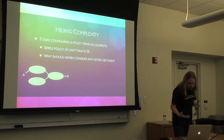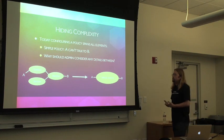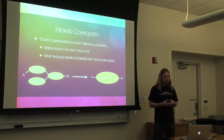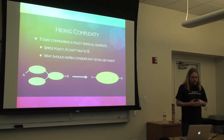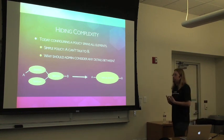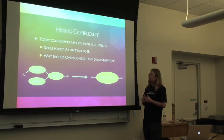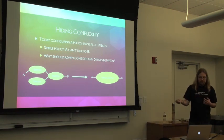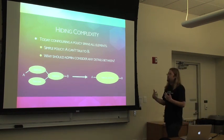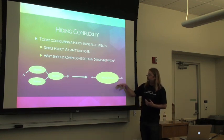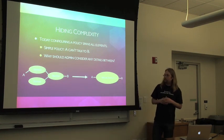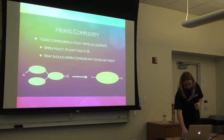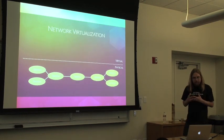Wouldn't it be much simpler if they were provided with a sort of virtual switch, and they would just operate with that, declaring the policies — A can talk with B — and then some magic below would take care of propagating all the policies properly within the network below? And it turns out that this sort of detail hiding is exactly what network virtualization is about. Instead of exposing the details of physical networks to the users as such, we let the users operate with a topology of virtual switches and routers.